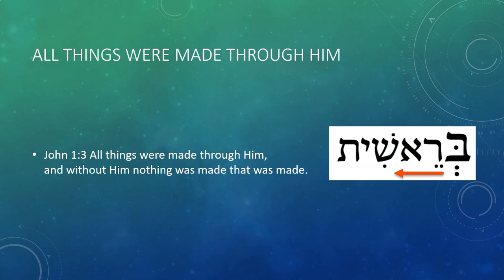But we can, from a believing perspective, see that this relates to the Son, the Son of God, Yeshua. Because it says in John 1:3 that all things were made through Him, and without Him nothing was made that was made. Peter goes on to say that He was there in the beginning with God. So creation came through the Son — it came out of Him — and this is hinted to and alluded in the very beginning of the Bible, in the first letter of the Bible.